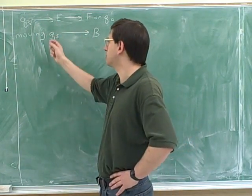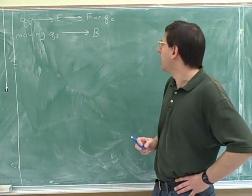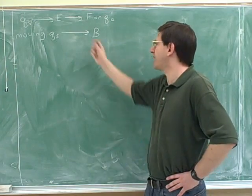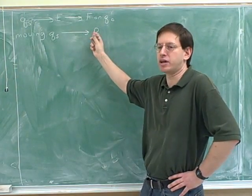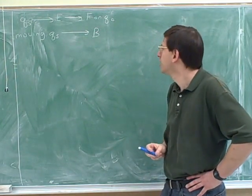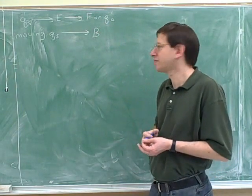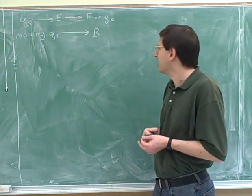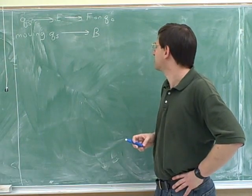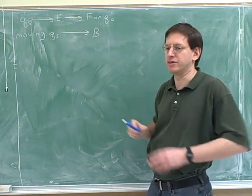I would call these the source charges because they're creating the magnetic field. The symbol for a magnetic field is capital B. We can't use F because that's already being used for force, and M is being used for mass, so I don't know what the logic is behind using B — but we're going to use capital B for magnetic field.